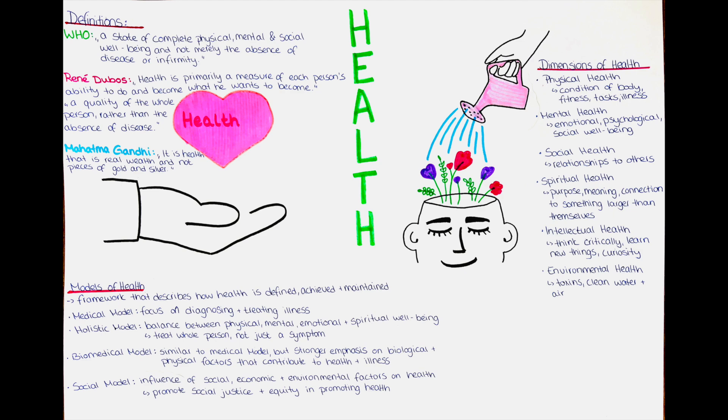What are some other definitions of health? René Dubois, a microbiologist and author, defined health in his book first published in 1959 as primarily a measure of each person's ability to do and become what he wants to become. He also defines health as a quality of the whole person rather than the absence of disease. This definition emphasizes that health is not just the absence of illness, but a state of overall well-being that encompasses physical, mental and social dimensions.